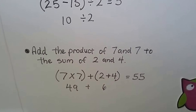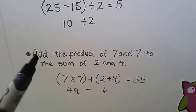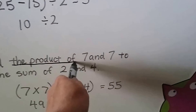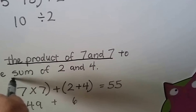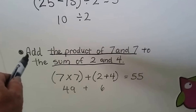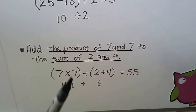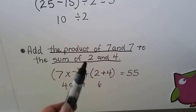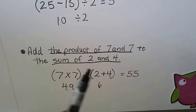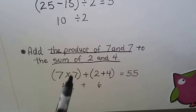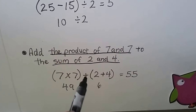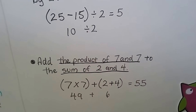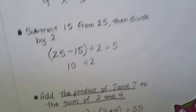'Add the product of 7 and 7 to the sum of 2 and 4.' The product of 7 and 7 is (7×7) = 49, and the sum of 2 and 4 is (2+4) = 6. We put each in parentheses with an addition sign in between: 49 plus 6 equals 55.